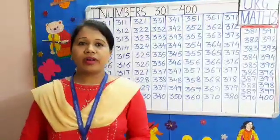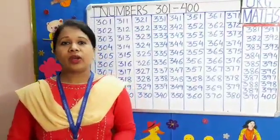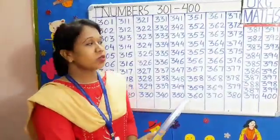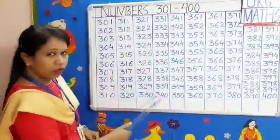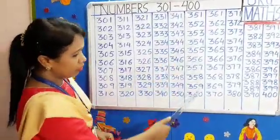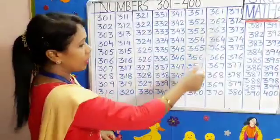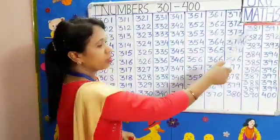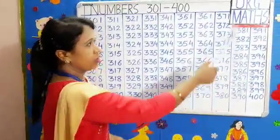So children, now you have learned and know the numbers, so you can keep on writing. Like this we go: 340, 350, 360, 370, 380, 390, 400.